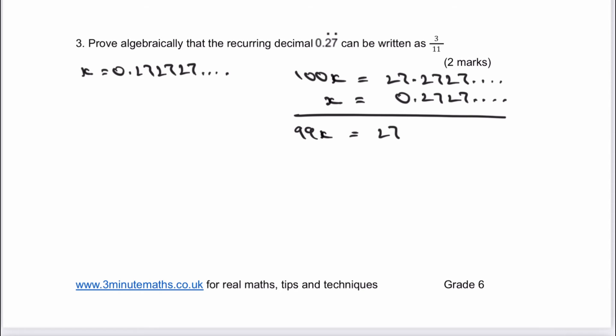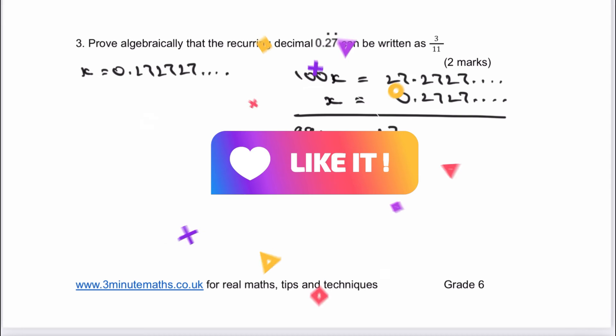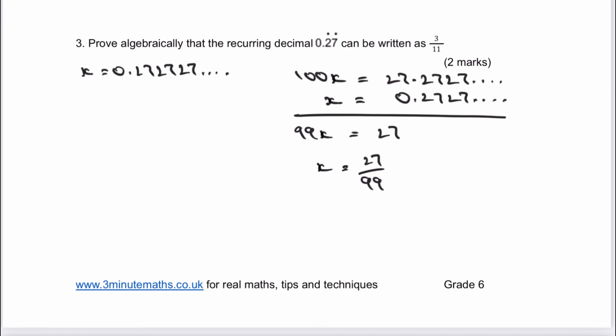If I divide through then by 99, I get x equals 27 over 99. And if I divide top and bottom through by 9, I'm actually going to get 3 over 11, which is the answer to this particular question.